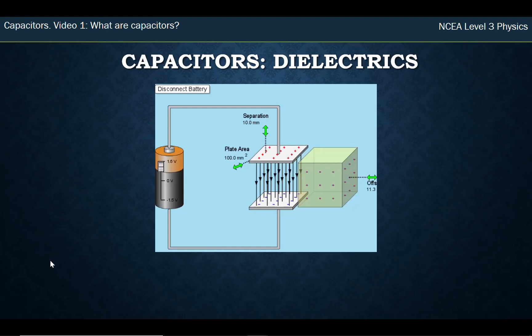Dielectrics - we can change what goes in between the two plates, and what that does is it can increase the ability of the capacitor to store charge. The way it does that is the dielectric can't conduct electricity, but it's made of atoms and those atoms can align themselves with the electric field in such a way that it strengthens the electric field and allows you to build up more charge on the plate.